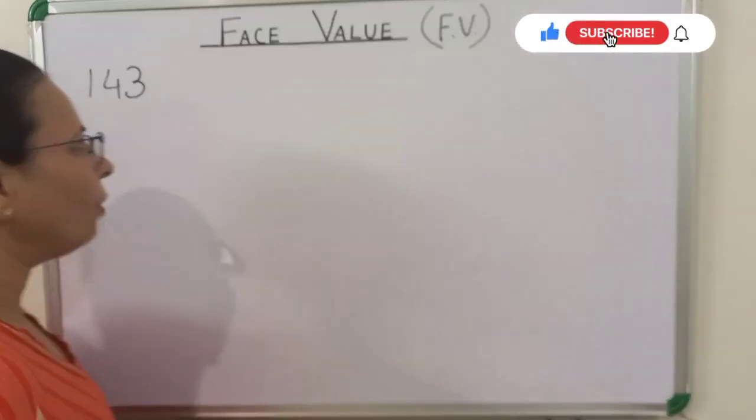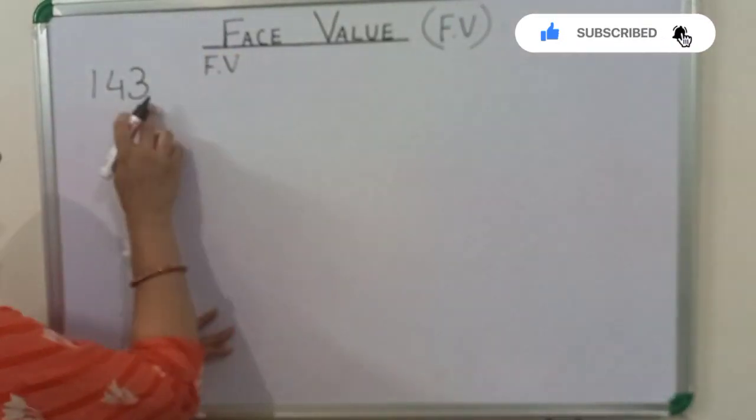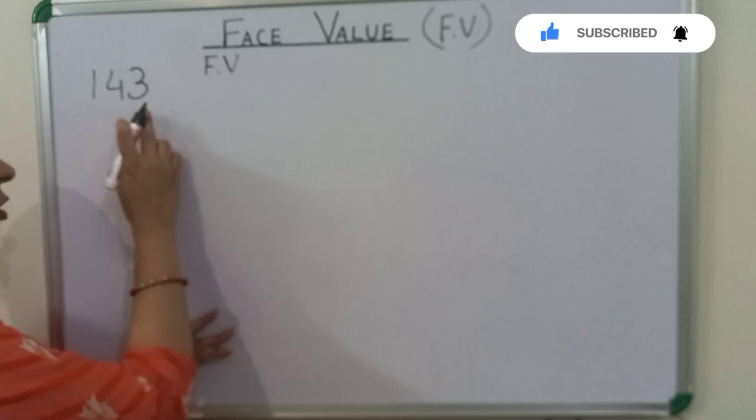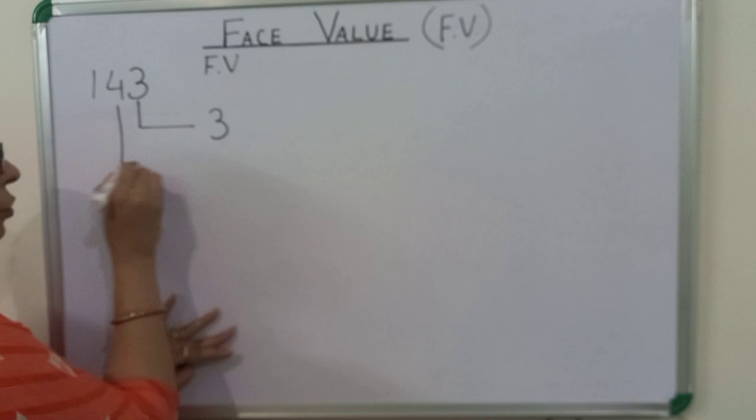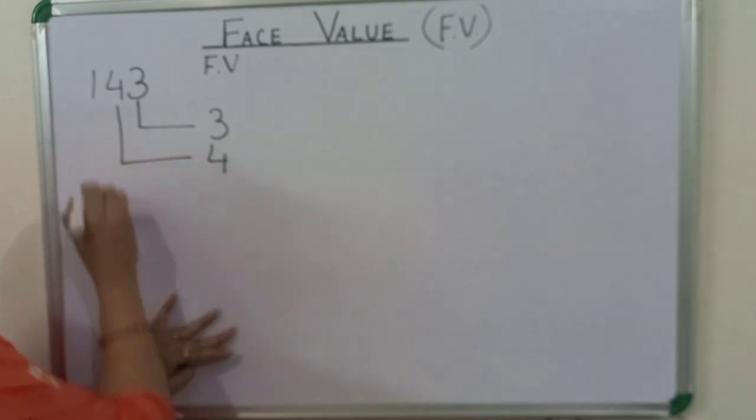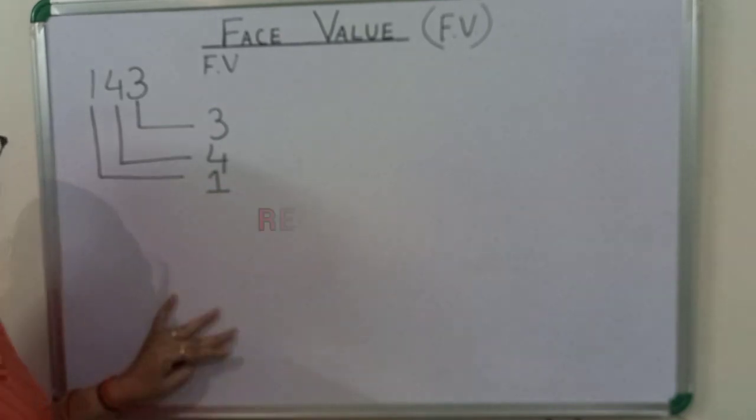Suppose we have to find face value of all the digits in 143. The face value of 3 is 3. The face value of 4 is 4. And the face value of 1 is 1.